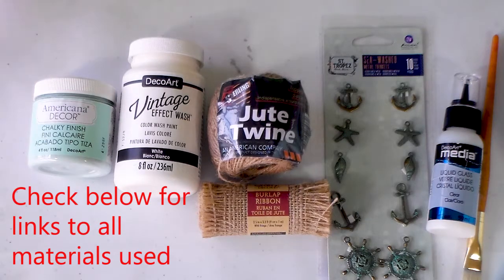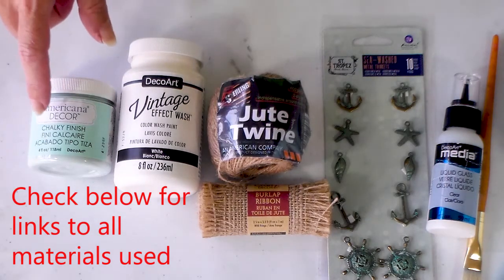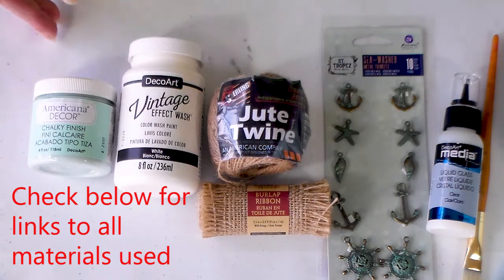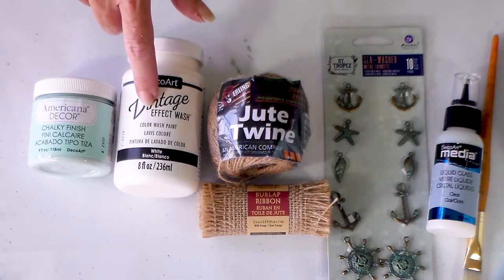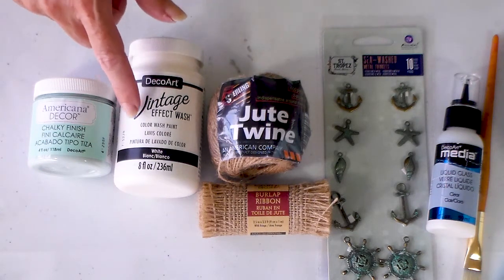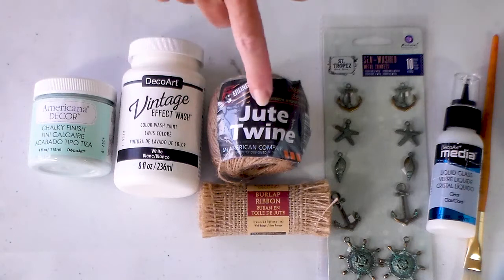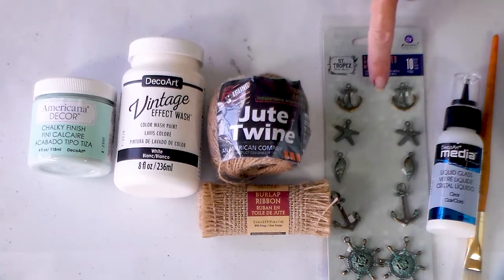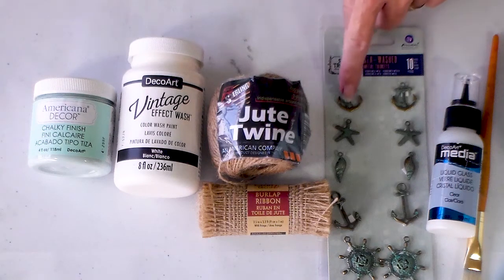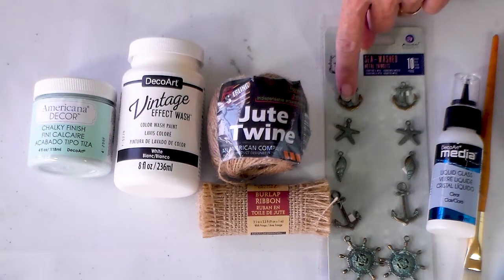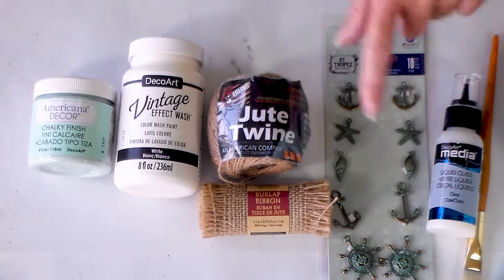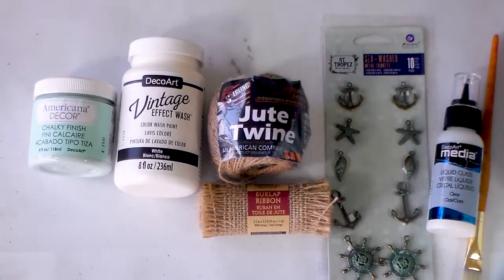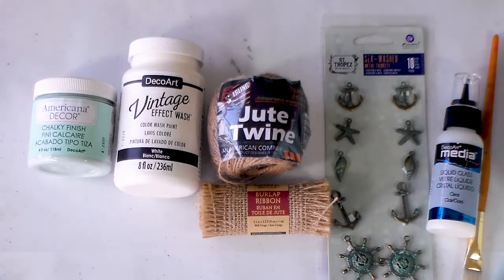These are the supplies that I'm using. I have an Americana Deco Chalky Finish paint in a minty green color called Refreshing. Then there's a DecoArt Vintage Effect Wash, a color wash paint in white. I also have some jute twine, some burlap ribbon, these really cute metal charms with a verdigris vintage kind of look, DecoArt Media liquid glass, a paintbrush, and of course some old jam jars, mason jars, ball jars or something like that.